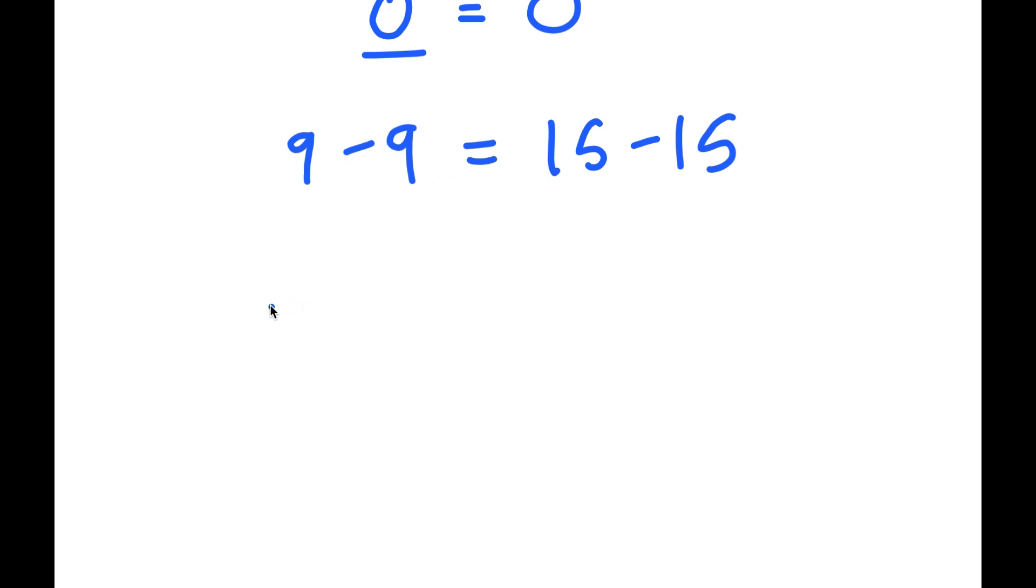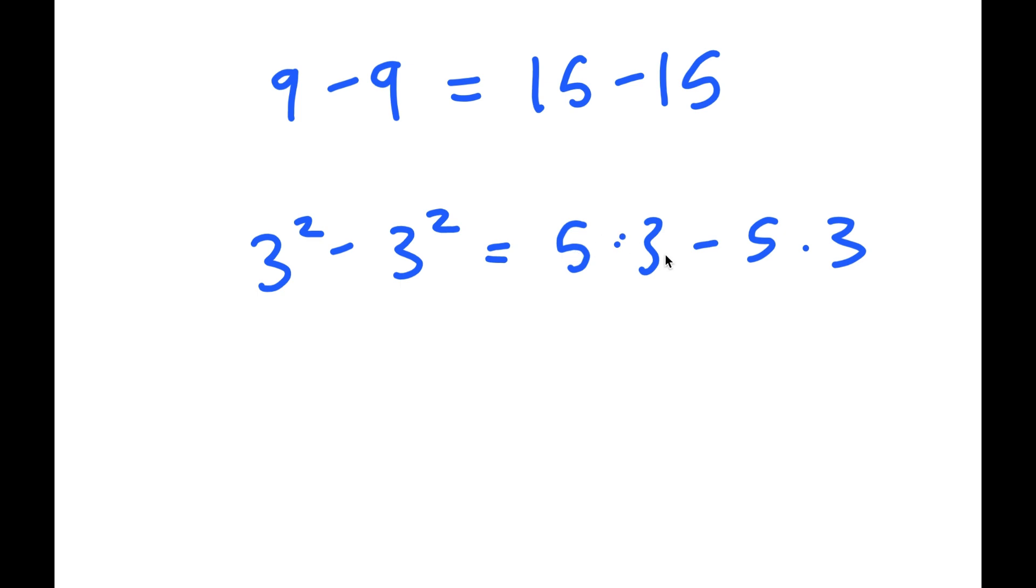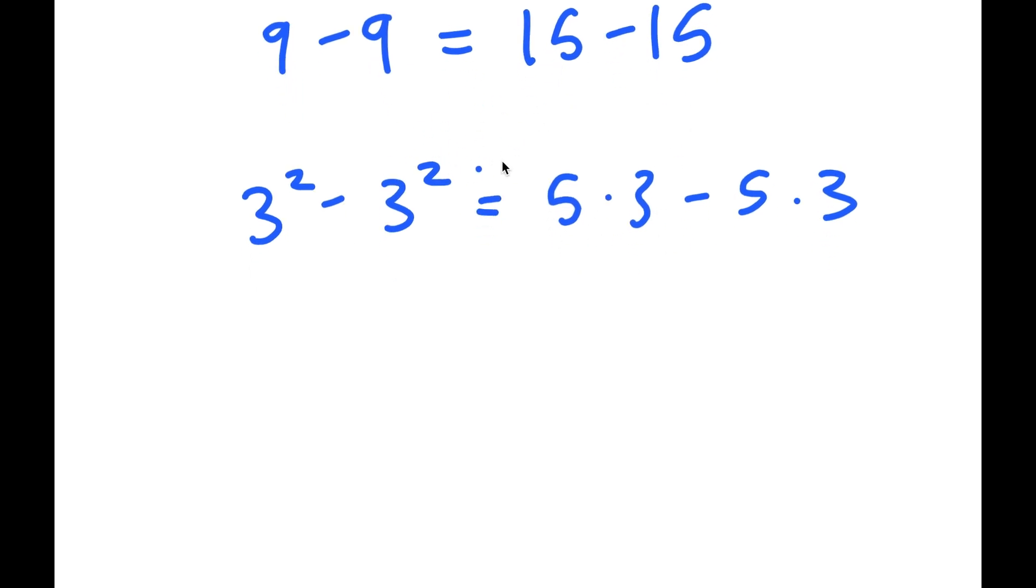Now, 9 minus 9, I can rewrite as 3 squared minus 3 squared. And 15 minus 15, I'm going to rewrite as 5 times 3 minus 5 times 3. 3 squared is 9, 5 times 3 is 15. So there's nothing wrong here.